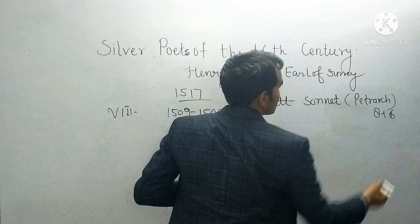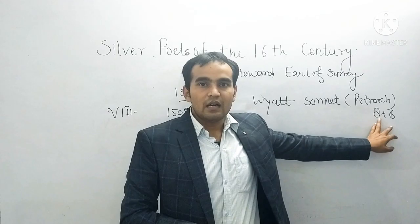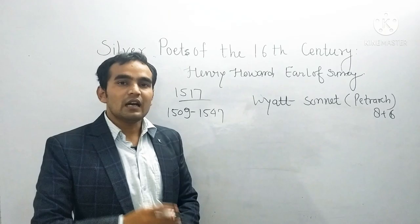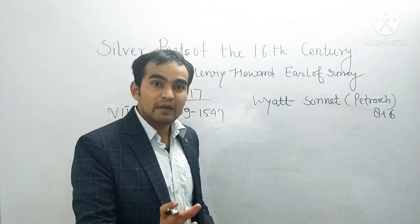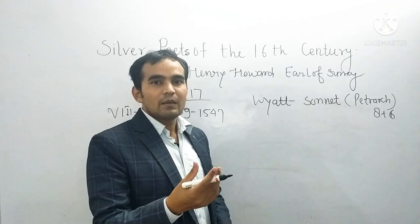The similarity was that Sir Thomas Wyatt had gone to Italy and brought back Petrarch's model of the sonnet. When Wyatt went to Italy, he brought back the sonnet. But this sonnet was based on the Petrarchan model - that is, Octave plus Sestet, meaning 8 plus 6 structure.